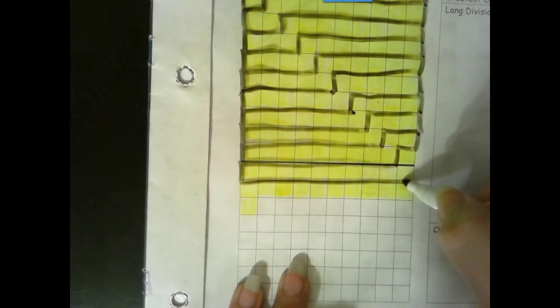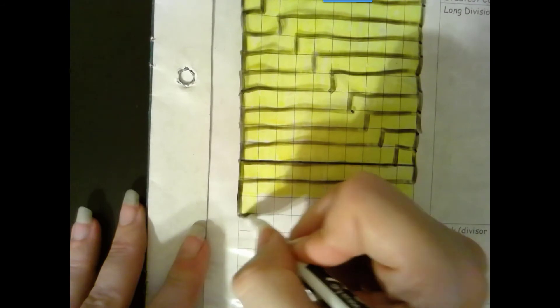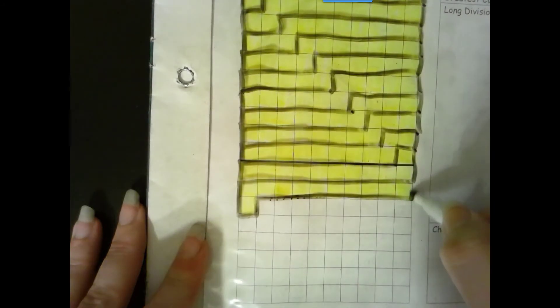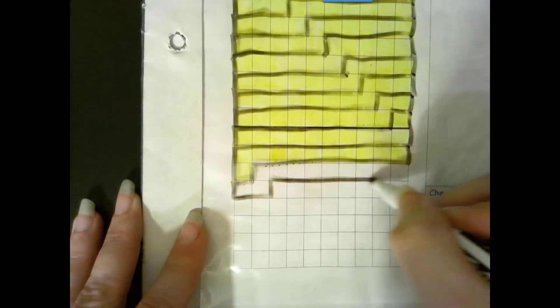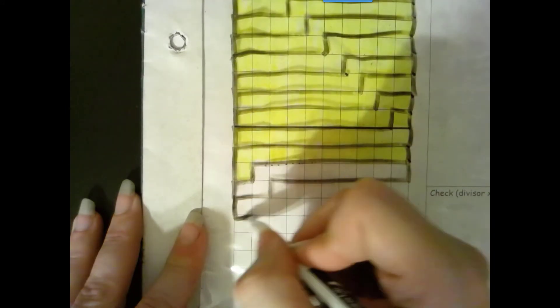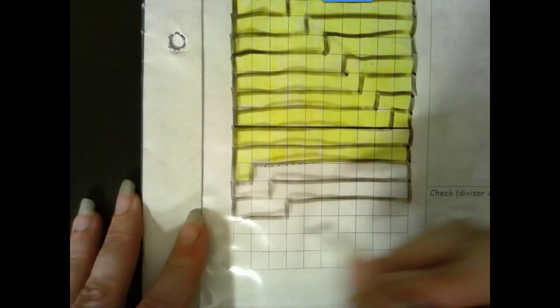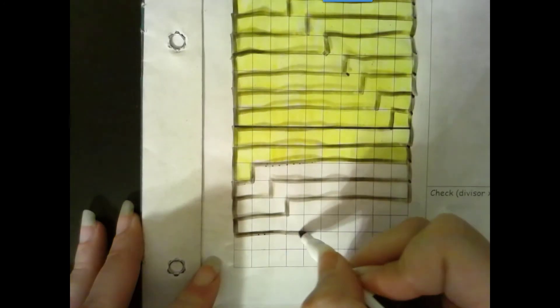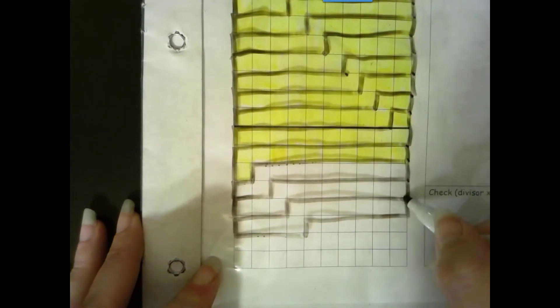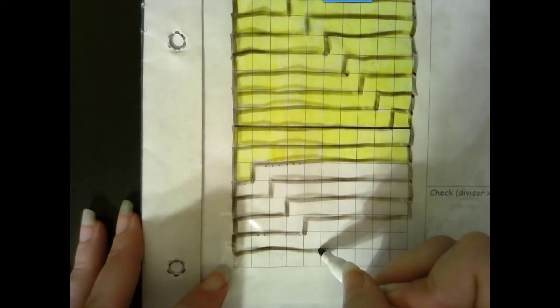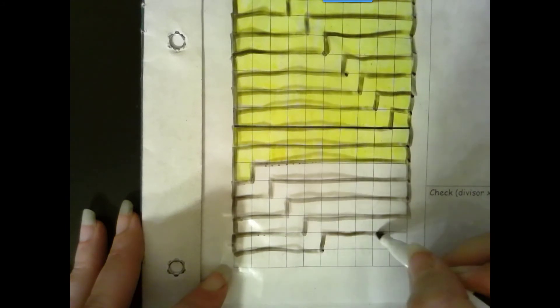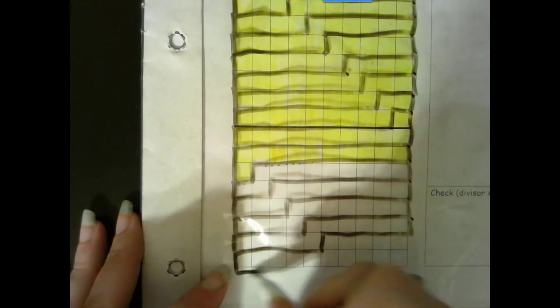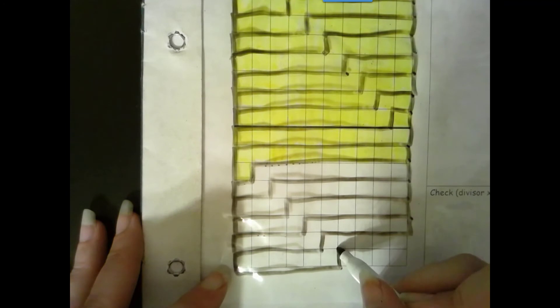9 plus 2, 1 plus 10, 10 plus 1, 2 plus 9, 8 plus 3, 7 plus 4, 6 plus 5, 5 plus 6, and I have 4 left over.